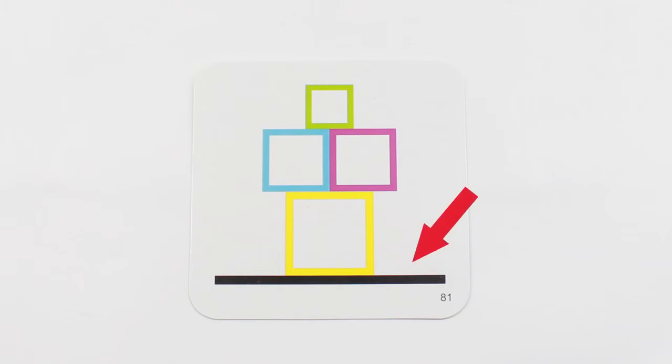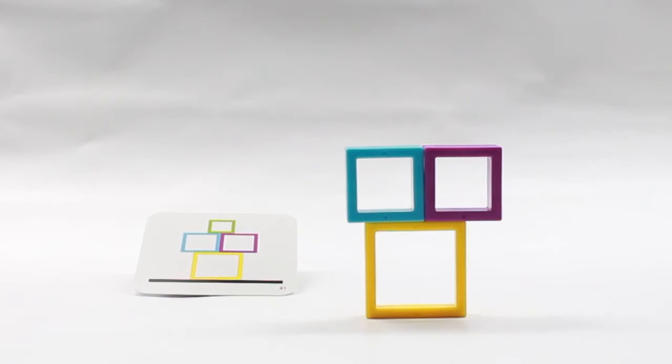Watch out! When a black line appears on a card, it represents the table. Now you have to stack your frames vertically to win.